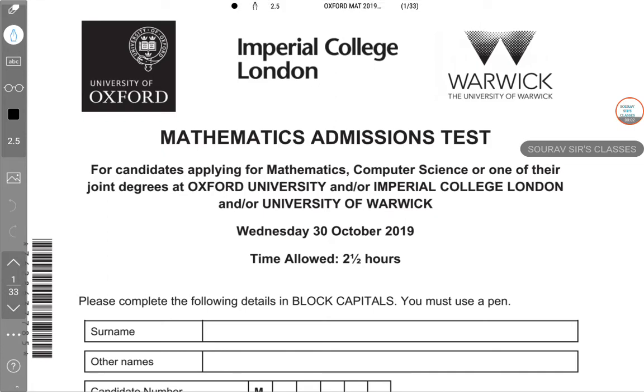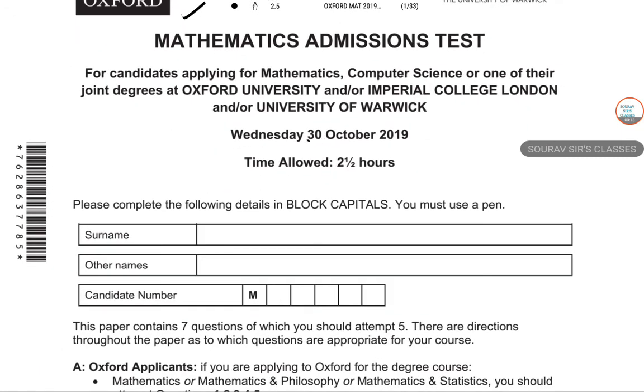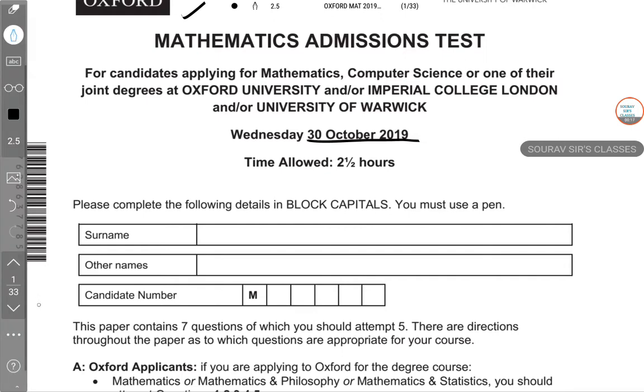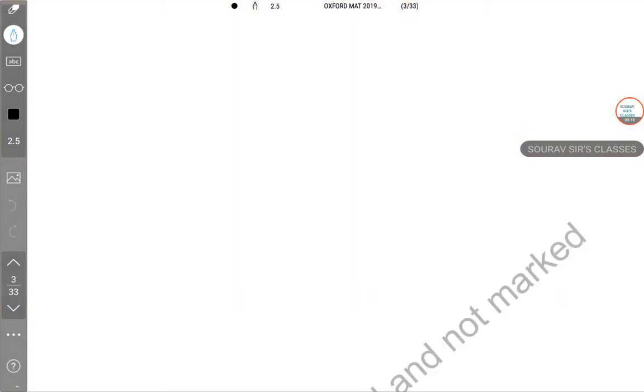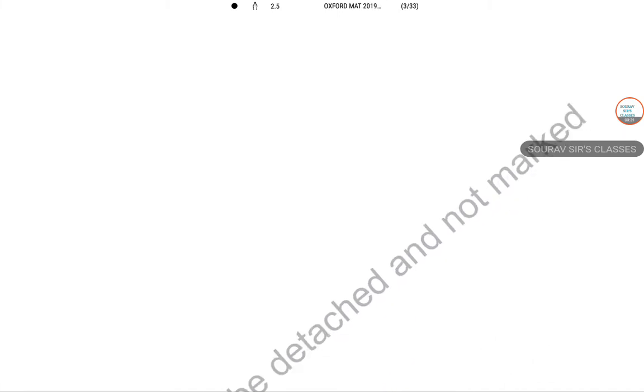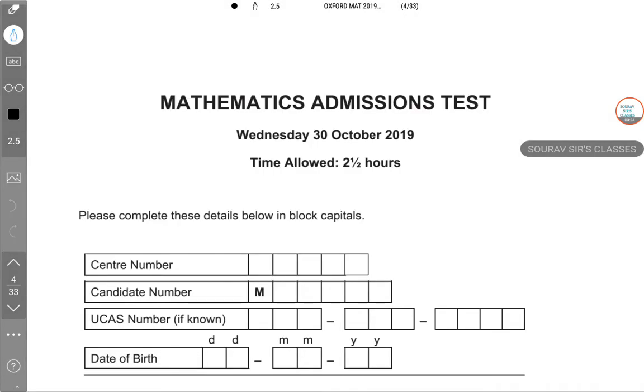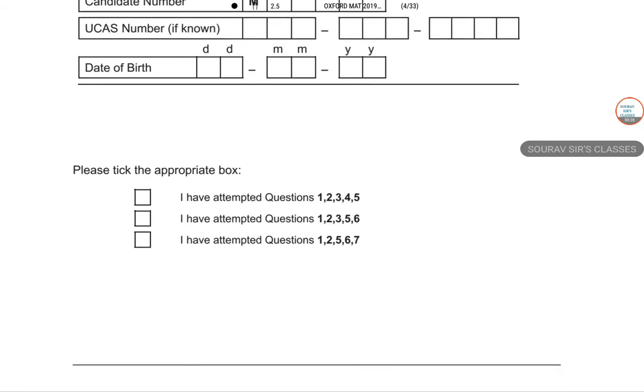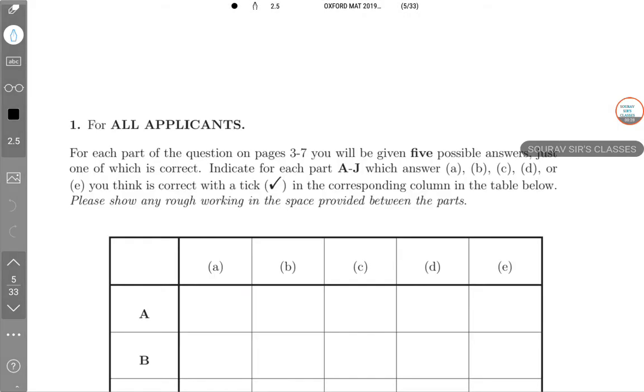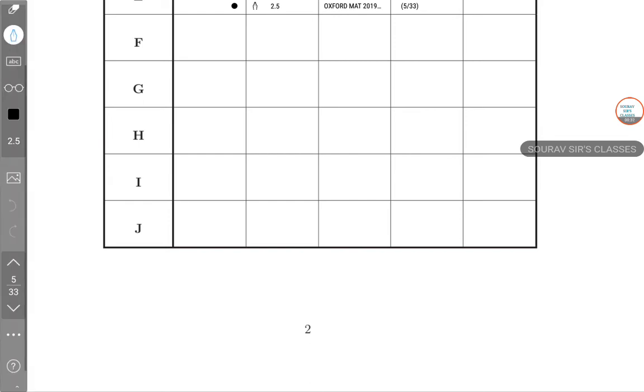Hello students, this video is about the Mathematics Admission Test for Imperial College of London, Warwick University, and University of Oxford. I will be solving questions from the examination that happened on 30th October 2019, the last examination at this point in time. We are about to start now. This is the introductory page, so we have nothing to do here. Our work starts from page number 6.